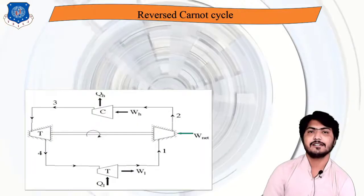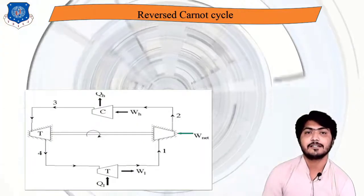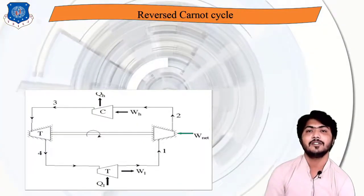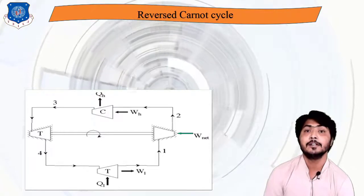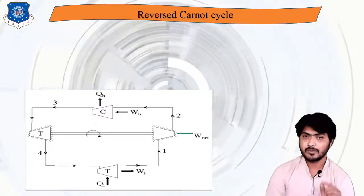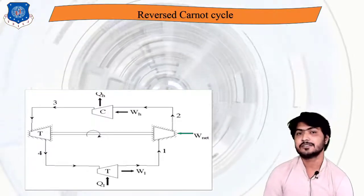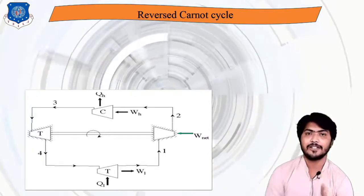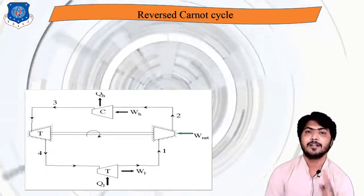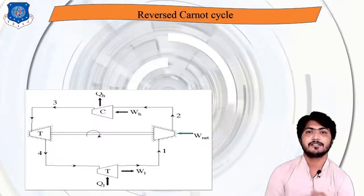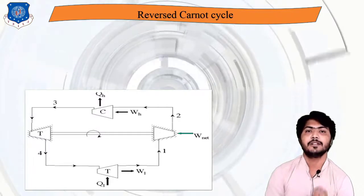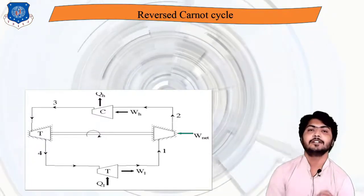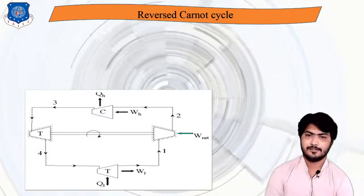First we discuss the reverse Carnot cycle. This is the air refrigeration cycle in which air is used as the refrigerant. The reverse Carnot cycle is not a practicable cycle — it is a theoretical cycle — but we study it for reference because it gives the maximum COP of the system.